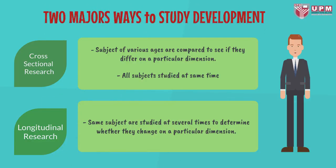Two major ways to study development. First, cross-sectional research: subjects of various ages are compared to see if they differ on a particular dimension, with all subjects studied at the same time. Second, longitudinal research: the same subject is studied at several points in time to determine whether they change on a particular dimension.